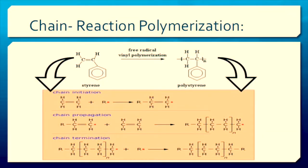The first reaction conducted in this experiment is chain reaction polymerization. Chain reaction polymerization is initiated by a cation, anion, or free radical. Free radical polymerization is a method of inducing chain reaction polymerization, which mechanistically is very similar to free radical halogenation of hydrocarbons. The polymerization of styrene to give polystyrene is an example of free radical polymerization.